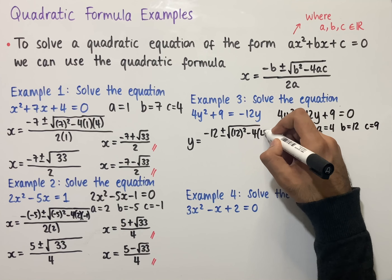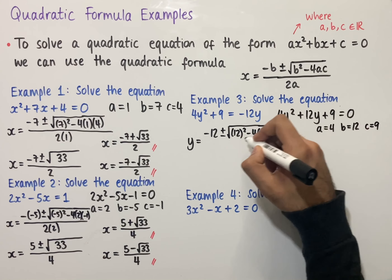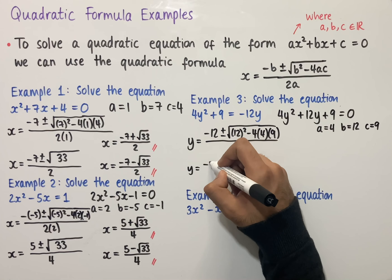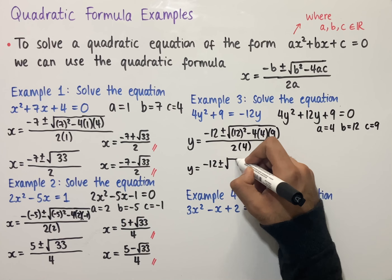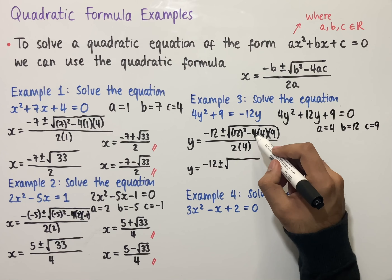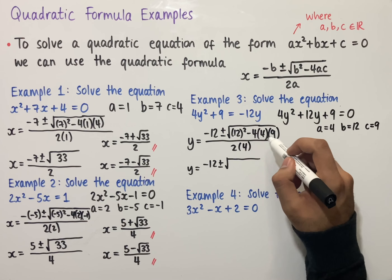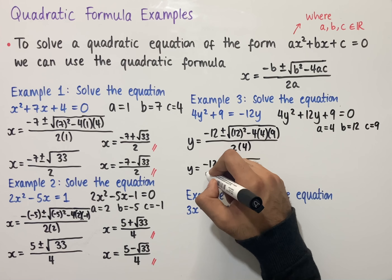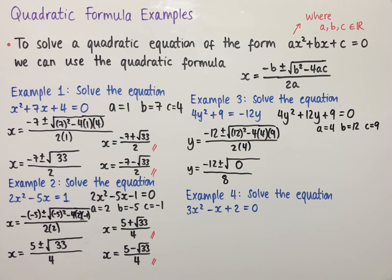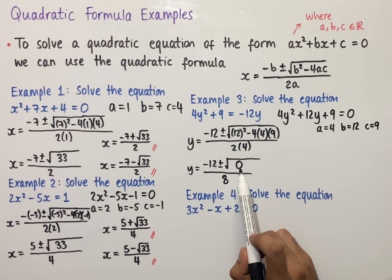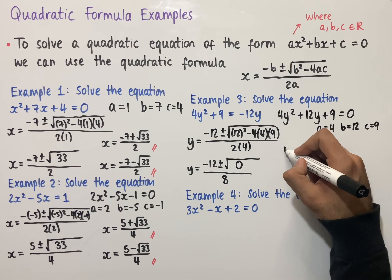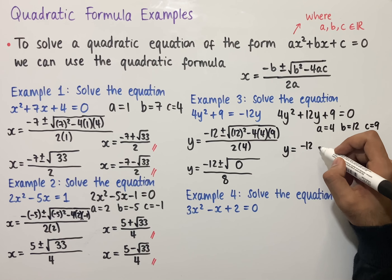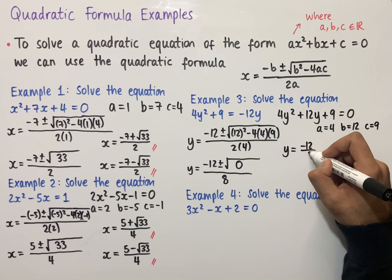Substituting into the quadratic formula, our solutions will be in terms of y. So y equals minus b, which is minus 12, plus or minus the square root of b², so that's 12 all squared, minus 4ac, where a = 4 and c = 9, all divided by 2a, which is 2 times 4. Simplifying, we get y equals minus 12, plus or minus the square root of 12², which is 144, minus 4 times 4 times 9, which is 144. So 144 minus 144 equals 0, all over 8.